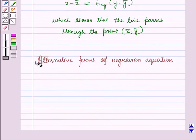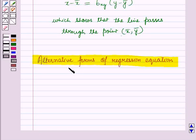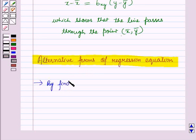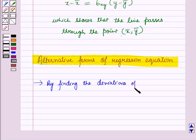This is the regression equation of x on y, which shows that the line passes through the point (x̄, ȳ), that is, the mean. Now let us discuss the alternative forms of the regression equation. We can find the alternative forms of the regression equation by finding the deviations of the x and y series from their respective means.